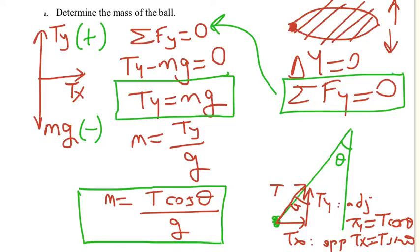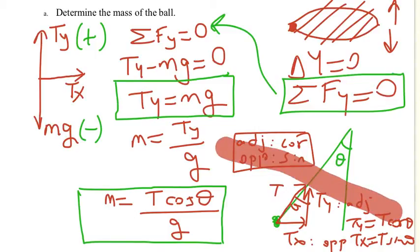That's what we get out of this. Let me just put it here as a note. I'm going to say adjacent for cosine and opposite for sine. That's what we do all the time. After you get Ty as T cosine theta, you just plug that value in here. And after that, what you get is T times cosine theta over G equals M.